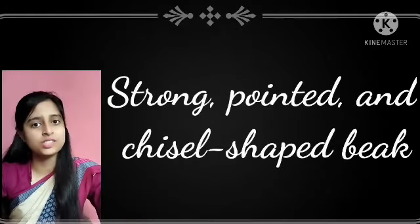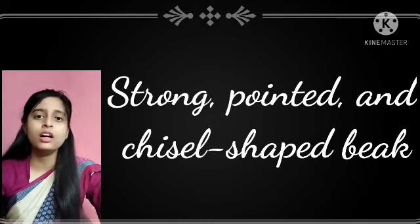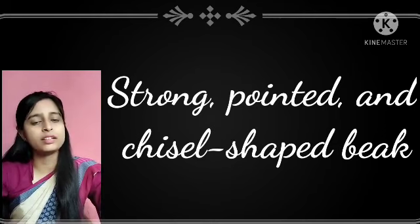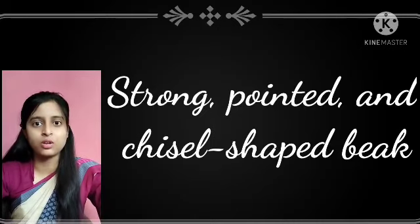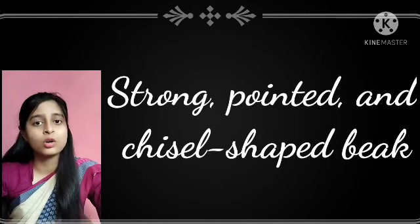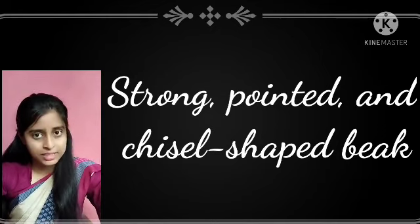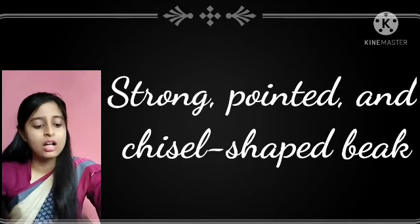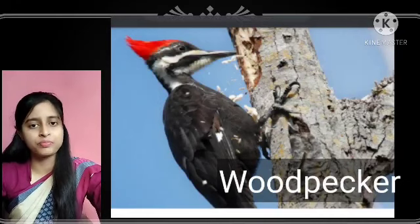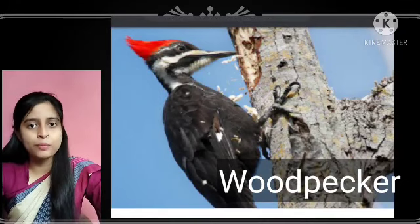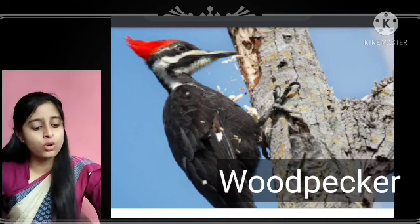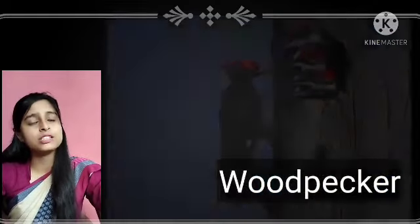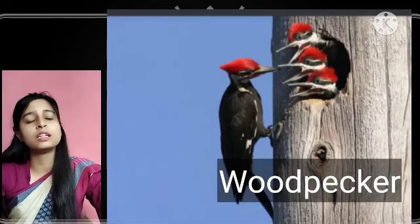Now we will see about the strong, sharp, and chisel-shaped beak. A chisel is a strong, pointed tool-like structure. Birds like woodpecker and hoopoe have a strong, pointed, and chisel-shaped beak. A woodpecker makes holes in the tree trunk with the help of its beak, as you can see on your screen, and lives in that hole.